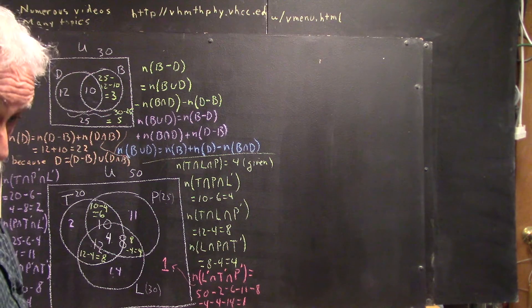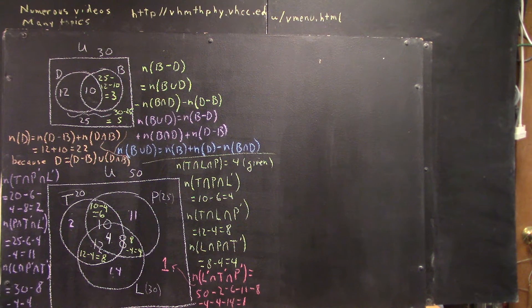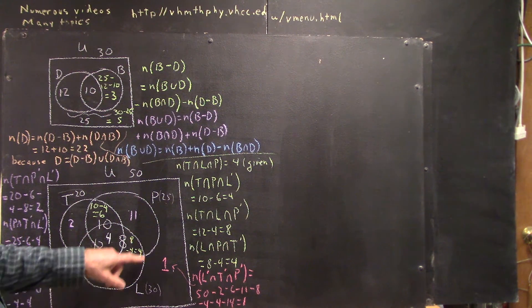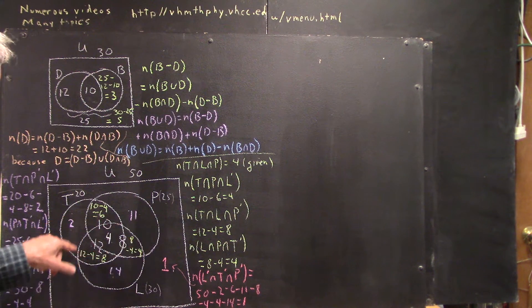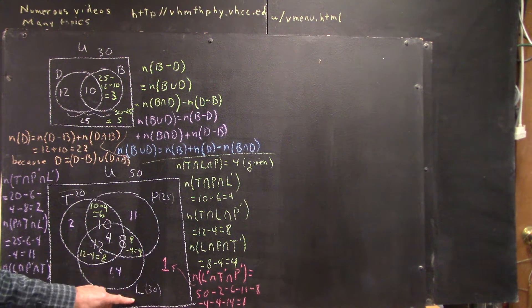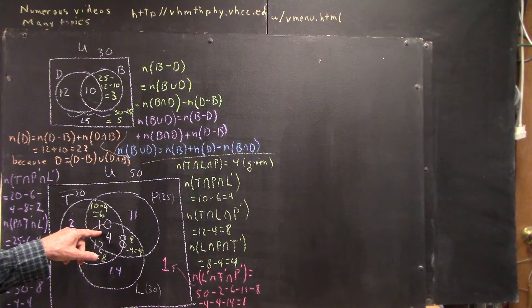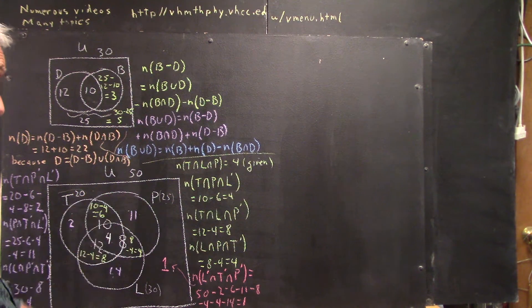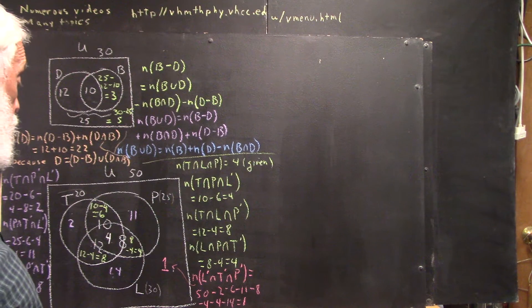We could have done that a little more efficiently. We could have said, well, I know that 30 of my songs are in the L circle. And what else is there? Just the 2, the 6, and the 11. So this could have been calculated as 50 minus 30 minus 6 minus 11.